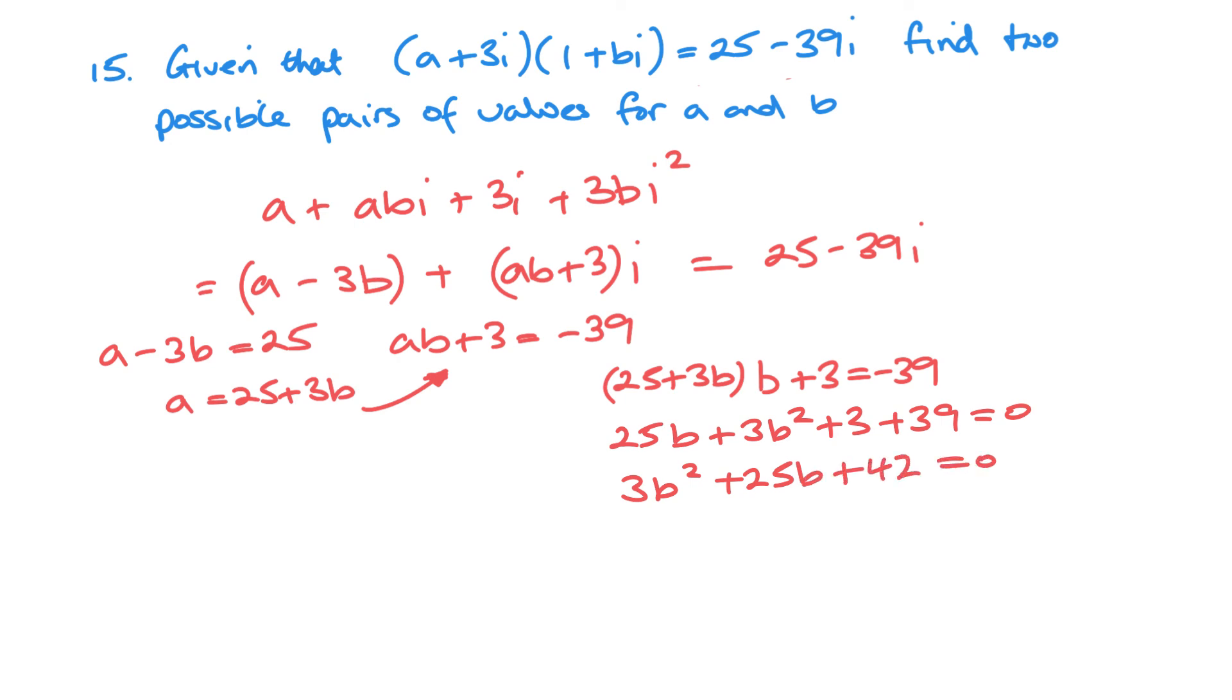And you can use the formula. You can use your calculator. You can put these in one bracket. So we've got b equals minus 7 over 3, b equals minus 6.